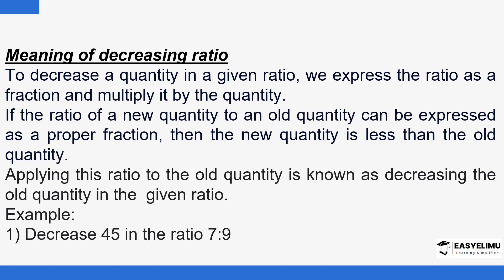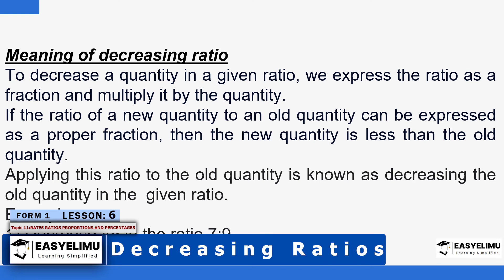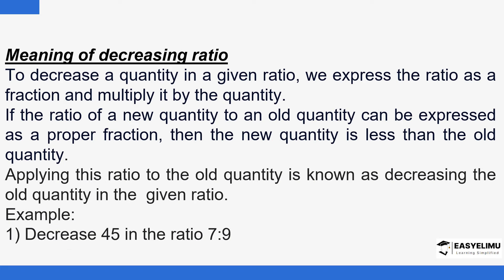If the ratio of a new quantity to an old quantity can be expressed as a proper fraction, then the new quantity should be less than the old quantity. This helps you gauge whether what you've done is right or wrong. For example, if you express this as a fraction it will be 7 over 9 — a proper fraction — which tells you the new quantity should be less than the original value.